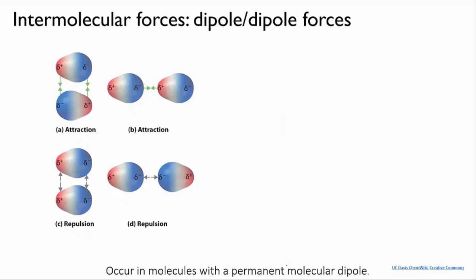Let's look at dipole-dipole attractions. These occur in molecules with an overall molecular dipole, a slightly positive end and a slightly negative end. In this picture here from the UC Davis Chem Wiki, these little diagrams are meant to represent HCl molecules.